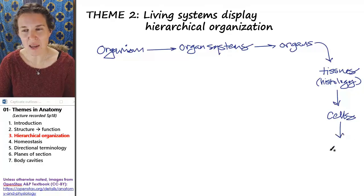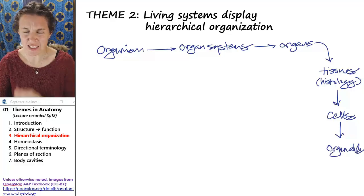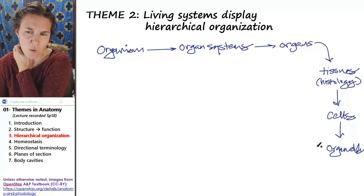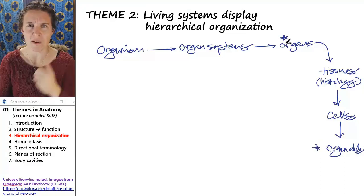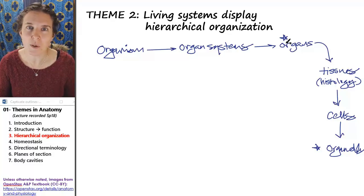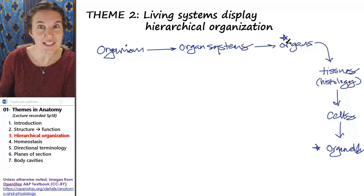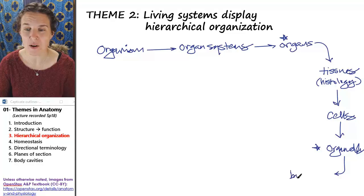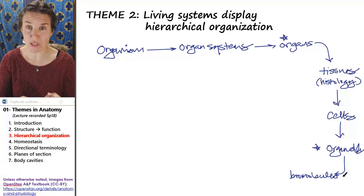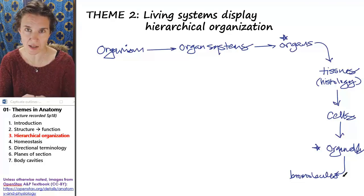Cells are made up of organelles. Organelles and organs — people get them confused for some reason. Organelle means 'little organ,' found inside a cell because it's a smaller level of organization than cells. And organelles are made up of biomolecules — proteins, carbohydrates, nucleic acids, and lipids.